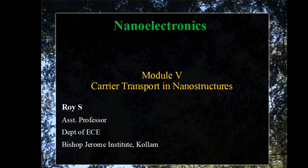Welcome to the online course of nano electronics. In this module 5, we will discuss the transport of charge carriers in two-dimensional electron gas formed in nanostructures. In previous module 4, we discussed how a two-dimensional electron gas is formed in heterostructures. Under quantum confinement, it is possible to move carriers in a plane parallel to the interfacial plane under the influence of electric field. This type of conduction is called parallel transport. It is also possible to have transport in a direction perpendicular to the confinement plane.